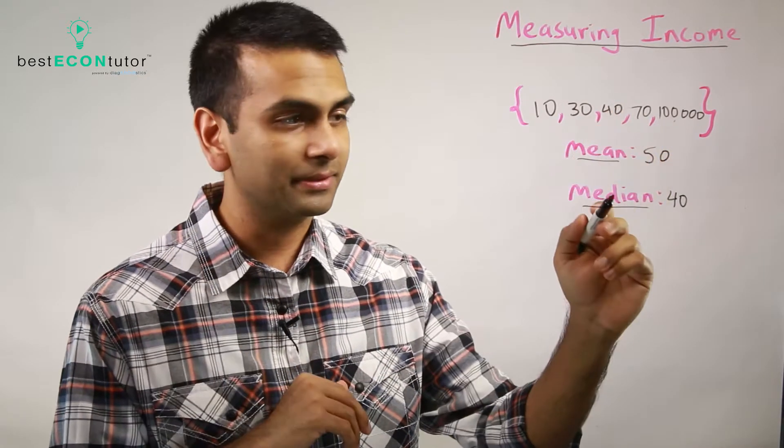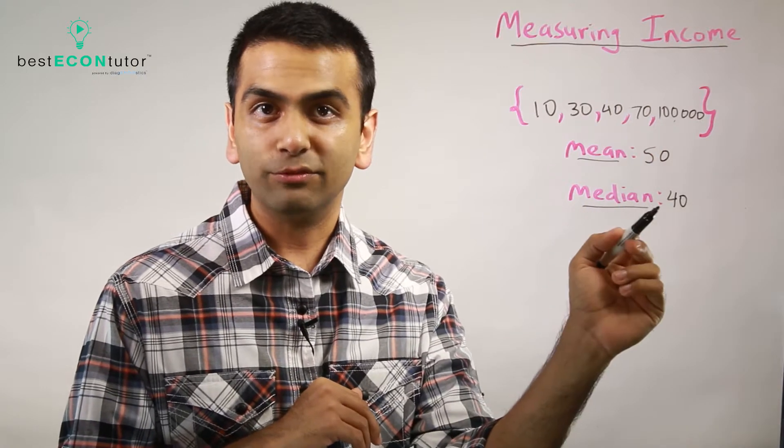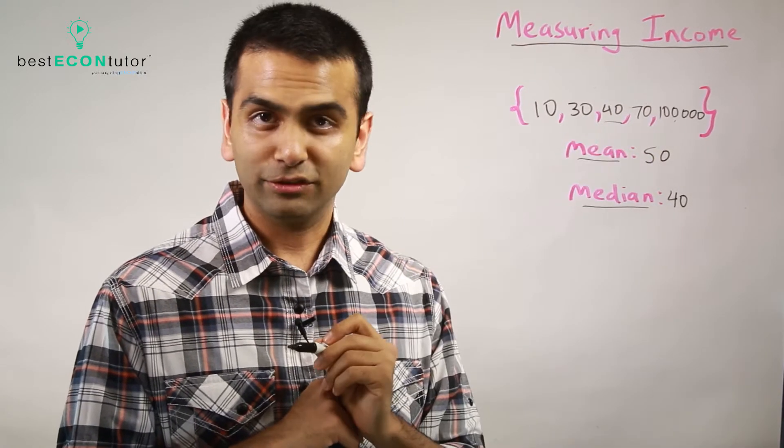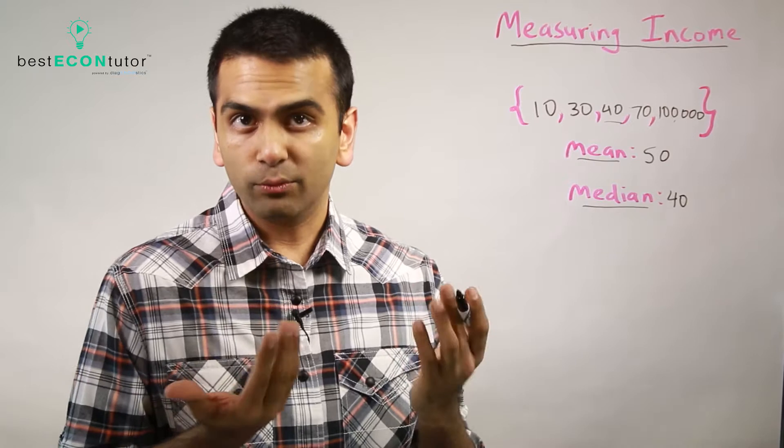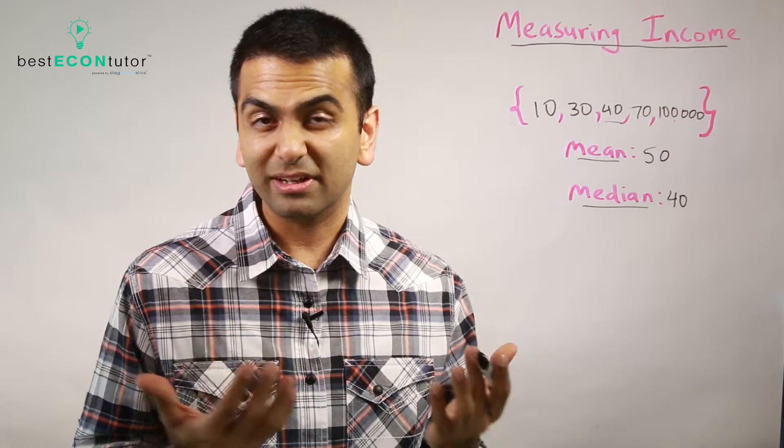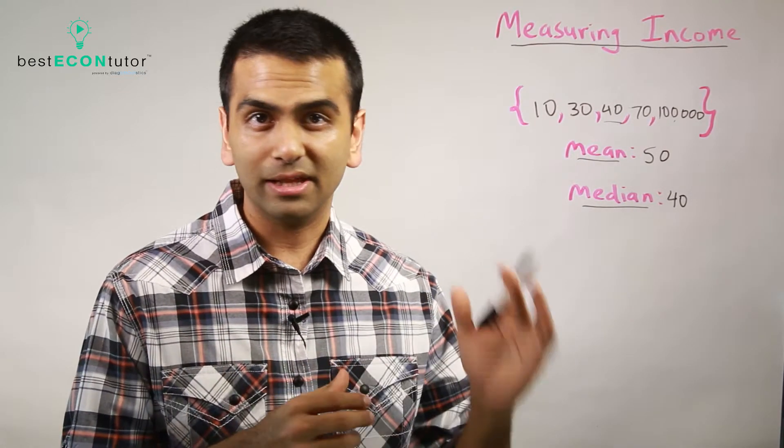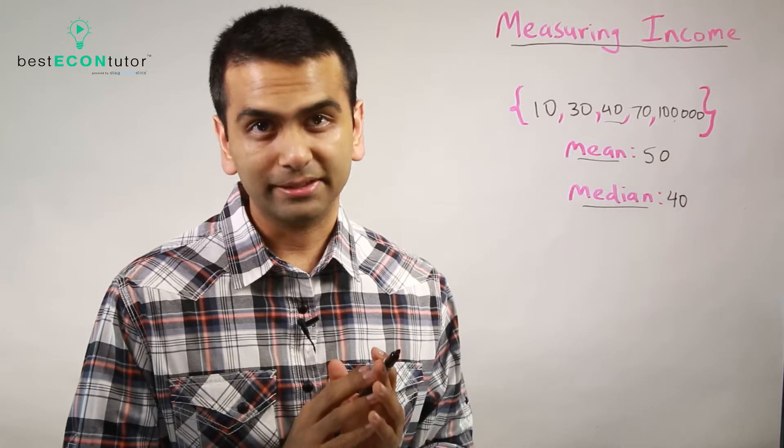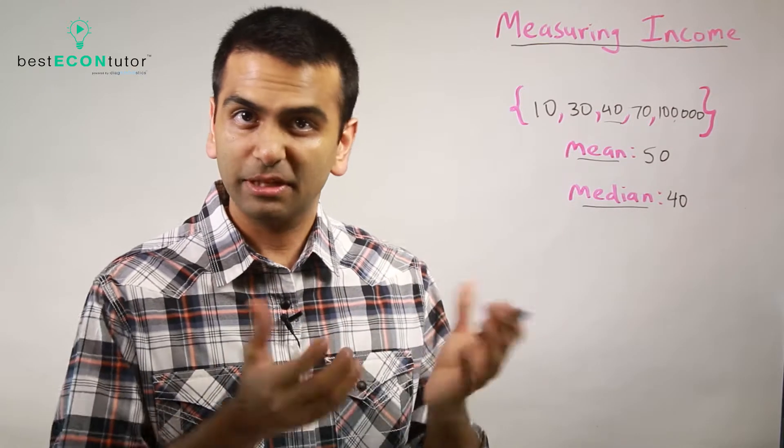Here, the mean would go up some crazy big number, but the median would stay at 40 because the middle number is still 40. So that's why one common way we actually measure income is the median. That way, if we have a lot of outliers, it's really not affected by them. So that's one way to measure the income.